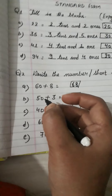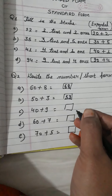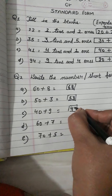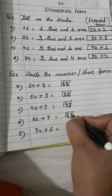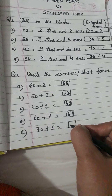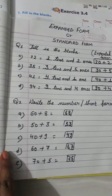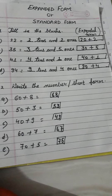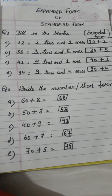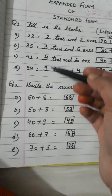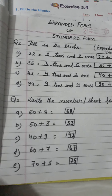Like this we will solve the next questions. 50 plus 3 means 5 tens and 3 ones. 40 plus 9 means 4 tens and 9 ones. 60 plus 7 means 6 tens and 7 ones. 70 plus 5 means 7 tens and 5 ones. Have you understood how we will solve the expanded form? Do practice in your rough notebook. You can take numbers of your choice and do practice. I will meet you in my next lecture with a new exercise.